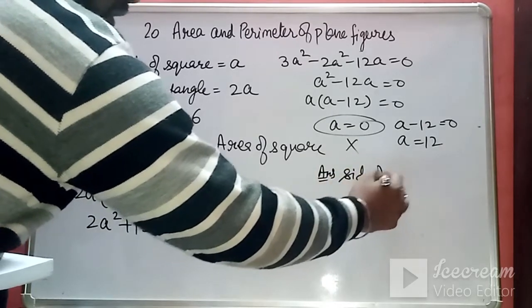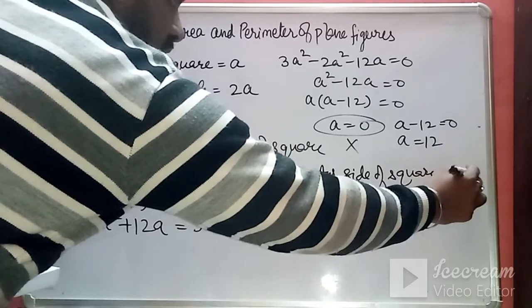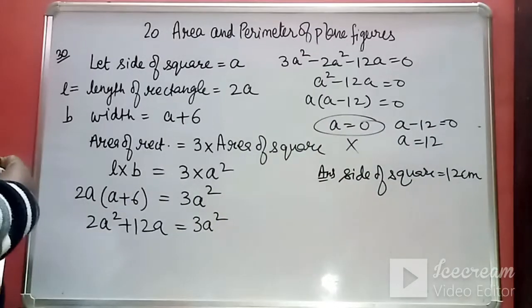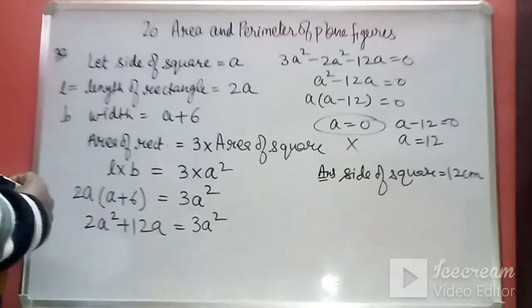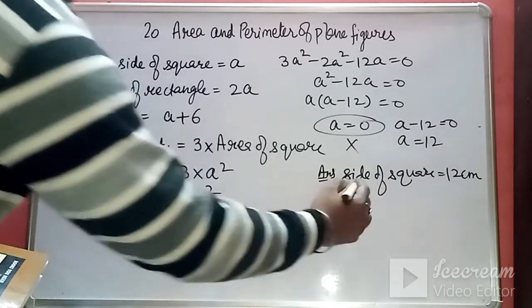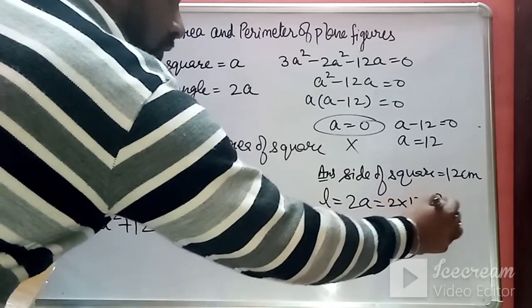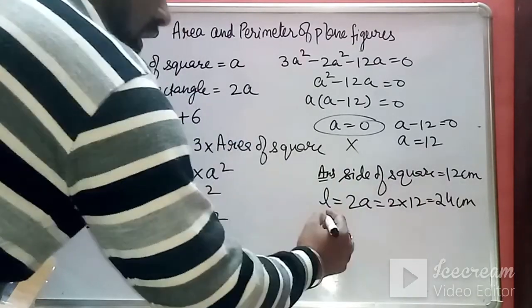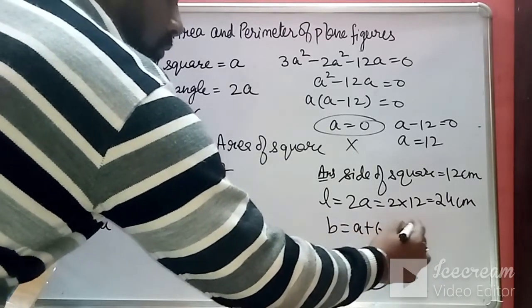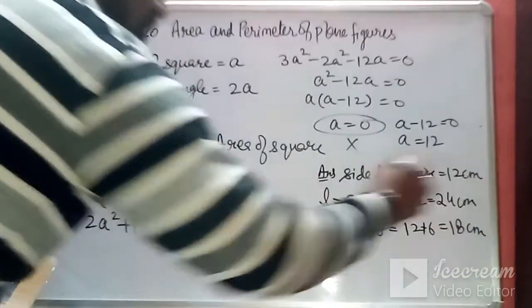The side of the square is 12 cm. The length of the rectangle is 2 times 12, that is 24 cm, and the breadth is 12 plus 6, that is 18 cm.